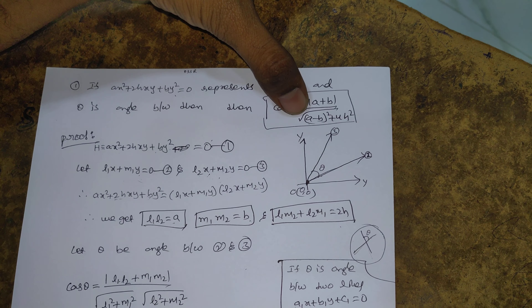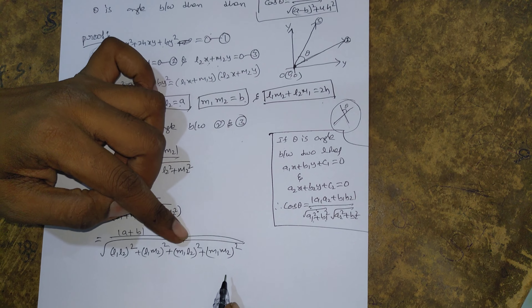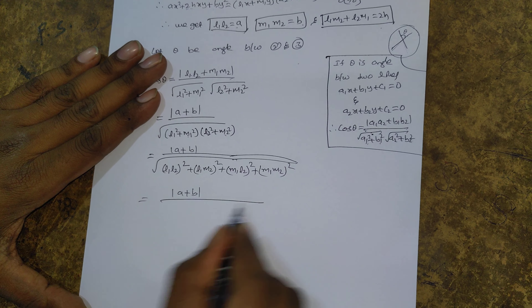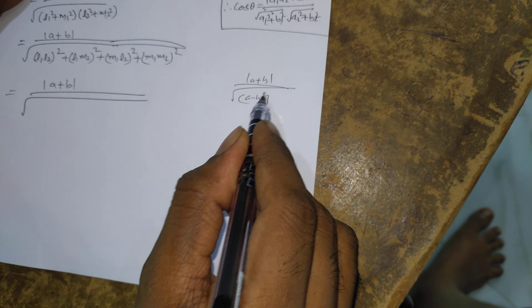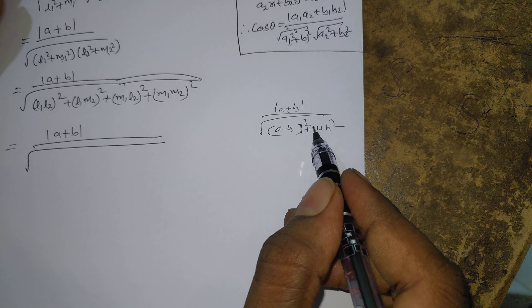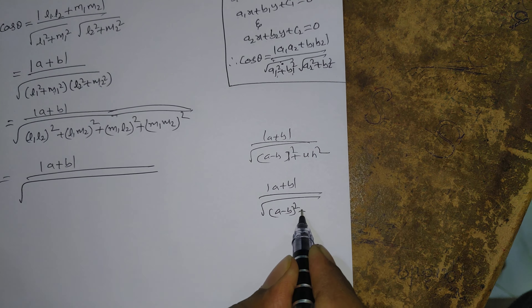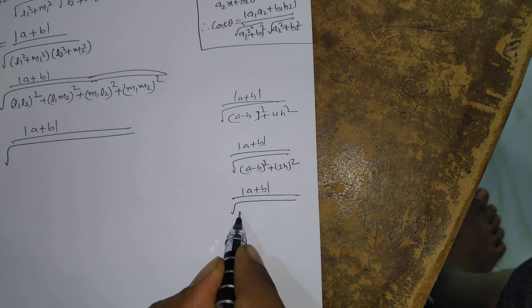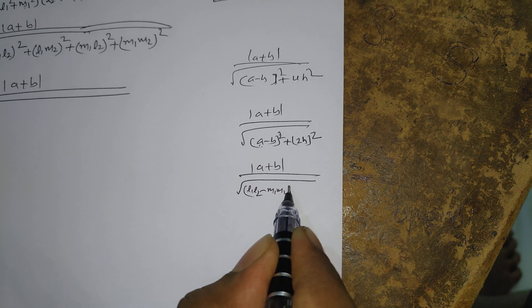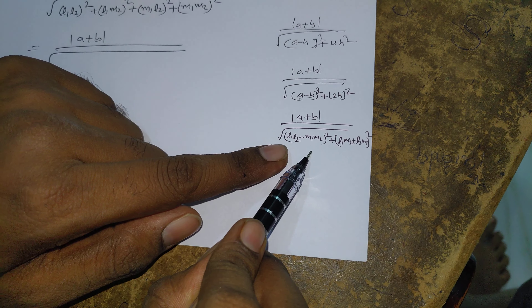We need to prove the denominator equals √((A - B)² + 4H²). We have the expression under the root: (L1·L2)² + (L1·M2)² + (M1·L2)² + (M1·M2)². This can be rearranged as (L1·L2 - M1·M2)² + (L1·M2 + L2·M1)². Since L1·L2 = a, M1·M2 = b, and L1·M2 + L2·M1 = 2h, this becomes (a - b)² + (2h)².